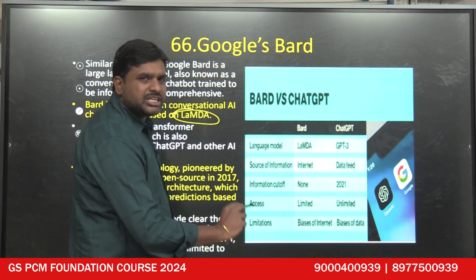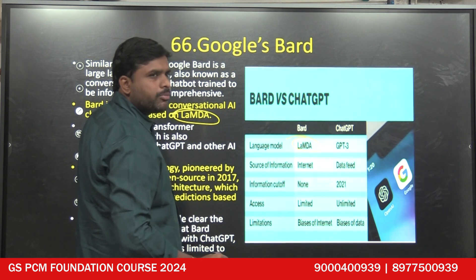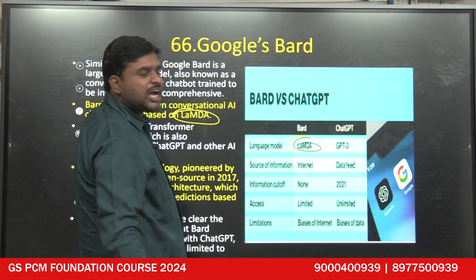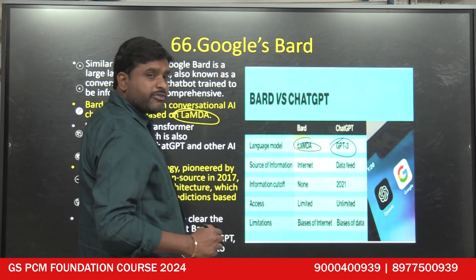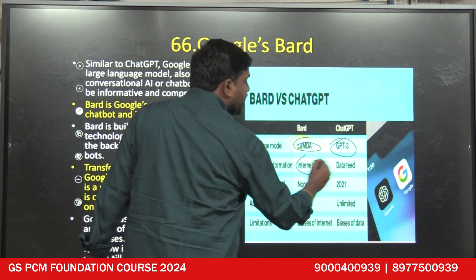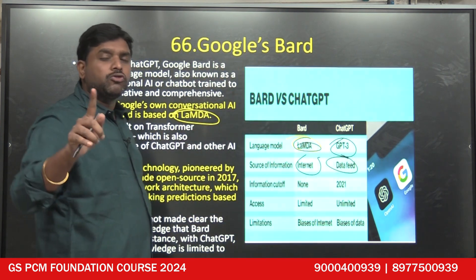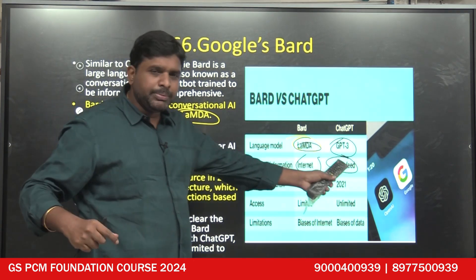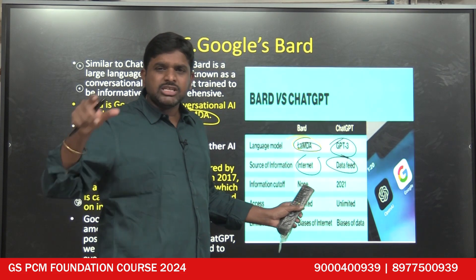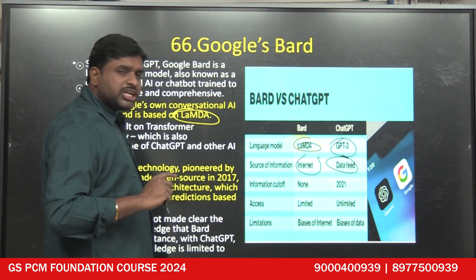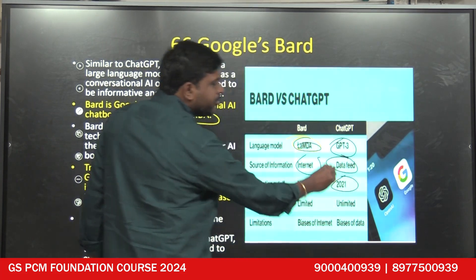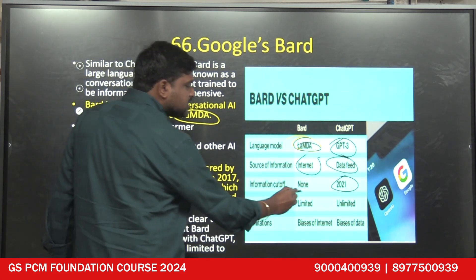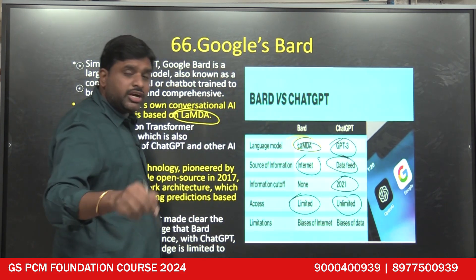Comparing Google Bard and ChatGPT: the language model used in Bard is LaMDA, whereas the model used in ChatGPT is GPT-3. The source of information in Bard is completely Google — it retrieves from the internet. Whereas in ChatGPT, data is fed only up to 2021, so answers are taken from that stored data. The information cutoff for ChatGPT is 2021, whereas for Bard there is no cutoff — it is updated continuously. Access to ChatGPT's data is limited to what is stored.